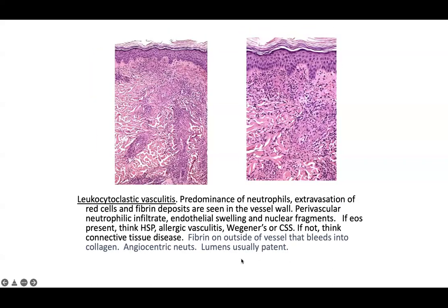Lumens are usually maintained open in leukocytoclastic vasculitis, but the fibrinoid necrosis of the outer vessel wall along with the abundant neutrophils makes it difficult to appreciate the cleanliness of the lumen in normal sections. The fibrin is pretty characteristic, but depending on when you biopsy LCV, you may not see a ton of fibrinoid necrosis. If you see abundant perivascular neutrophilic inflammation, leukocytoclasis, and extravasated erythrocytes with even foci of beginning fibrinoid necrosis, you can feel pretty confident calling it leukocytoclastic vasculitis.